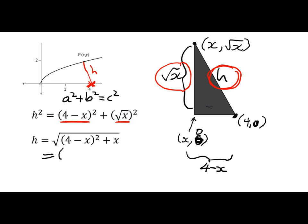So expanding out the brackets is going to give me 16 minus 8x plus x squared plus x to the power of a half. Notice that that x is coming from squaring root x. So cleaning that up, we get 16 minus 7x plus 2x to the power of one half.